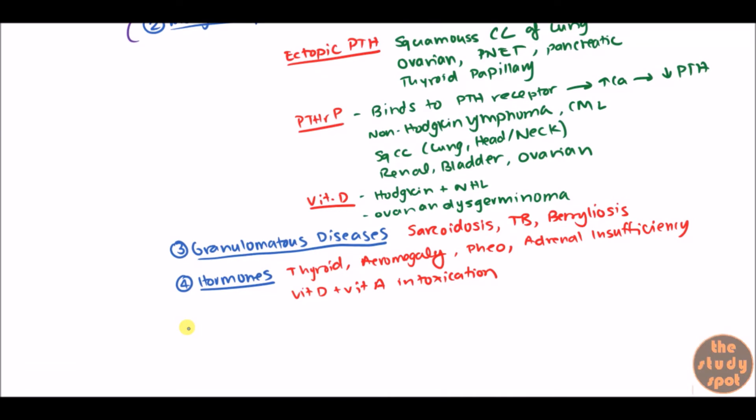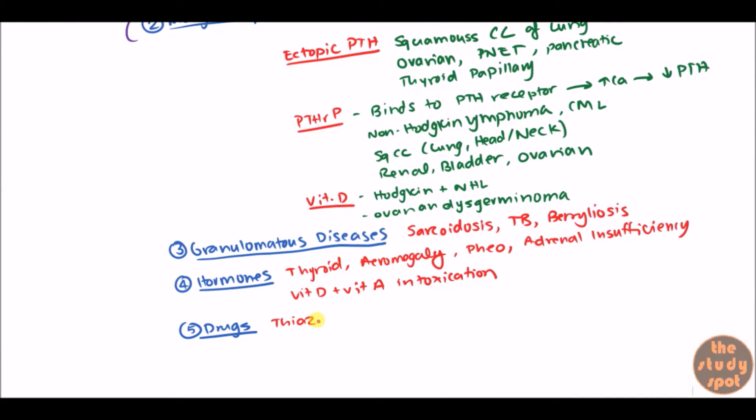Now, let's move on to the next category which is going to be drugs. So drugs definitely can cause hypercalcemia. Thiazides cause hypercalcemia because of the increased reabsorption in the kidneys. Of course, you have lithium and then theophylline.